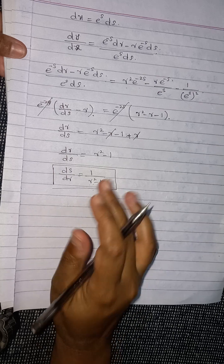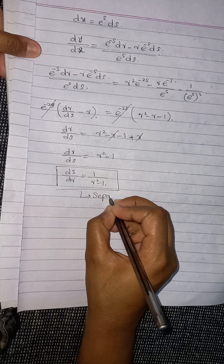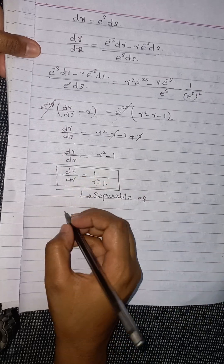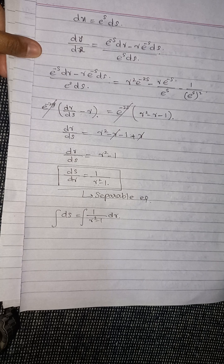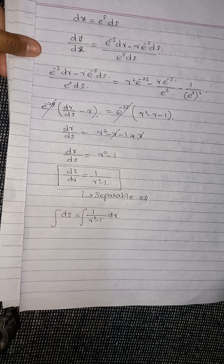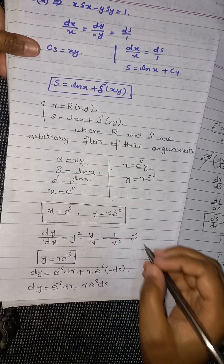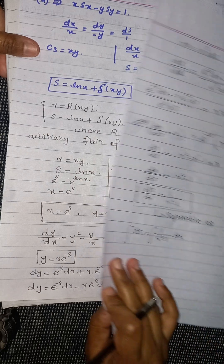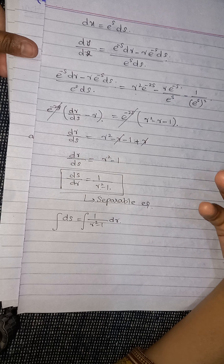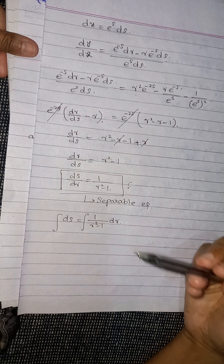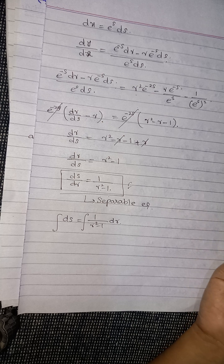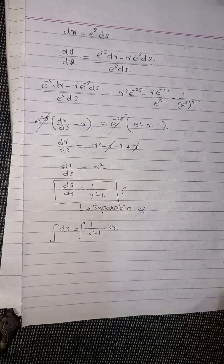This is a separable equation, because we can write it as ds equals 1/(r² − 1) dr and integrate both sides using simple integration techniques. Our given ODE was difficult to solve, but by using the change of variables we have converted it into a separable equation, which is easy to solve. After finding the answer, you can substitute the values of r and s back in terms of x and y to obtain your final answer in x and y coordinates.